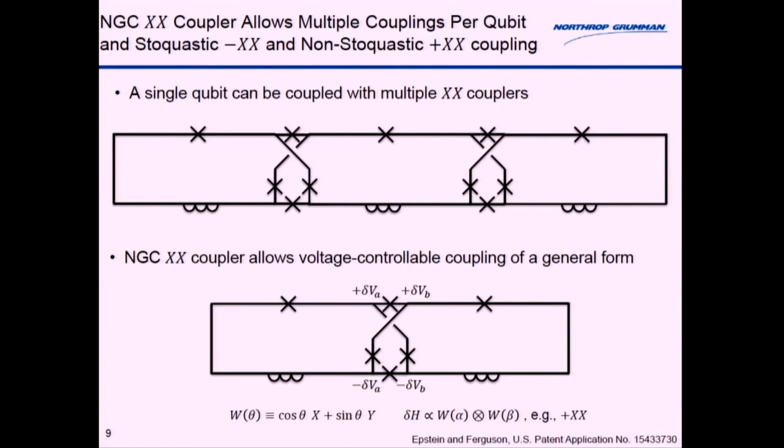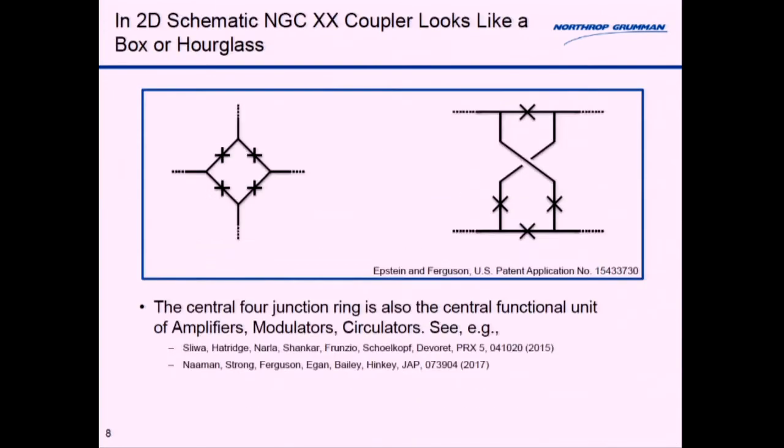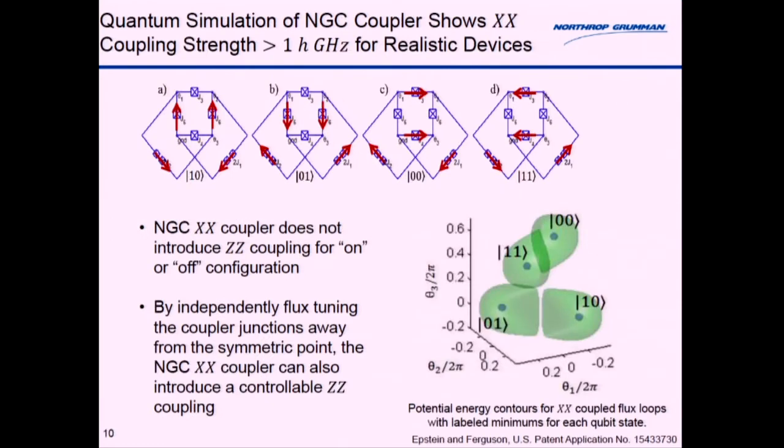That's great but the real critical point is that when you start to add in voltage biases you change the type of coupling. By choosing this voltage you can effectively choose the angle of the operator to which you are coupling. For instance by choosing these voltages you can turn it from minus XX to plus XX or indeed any XY or any coupling that you would like.